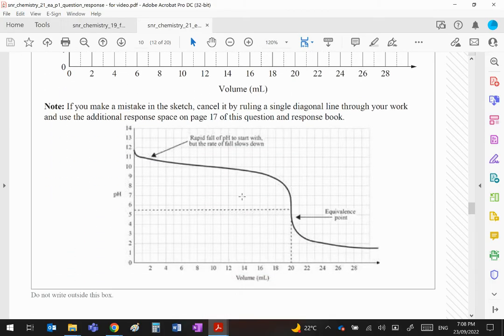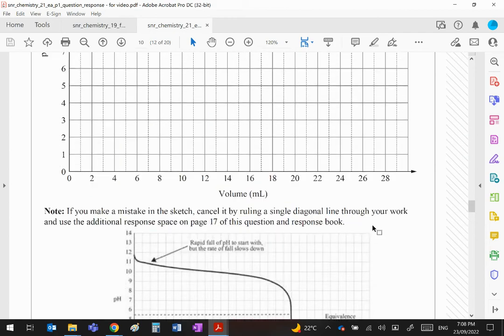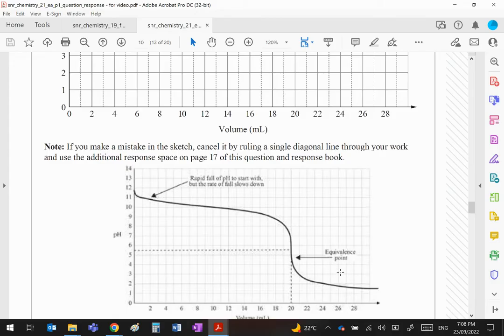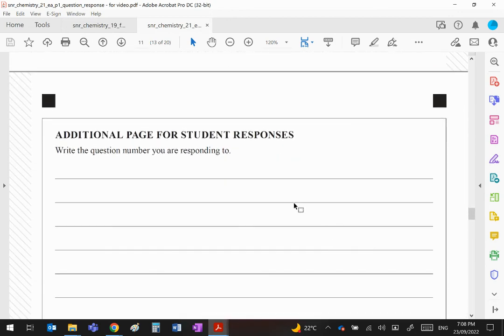Sketch the titration curve. Well here's the answer given by QCA. You can see they've marked the equivalence point. Again, how many marks are given? Three marks. So I'm guessing they've given probably one for the general shape, one for the end point at 20, and probably one for pointing out the equivalence point is the halfway point there. That's a little bit low, the equivalence point is the halfway point there. You can see they've marked it with a dotted line even though the arrow is pointing a little bit low. Right guys, that covers paper one.